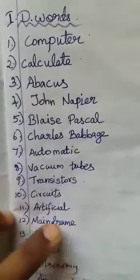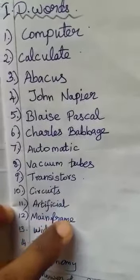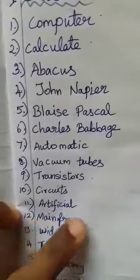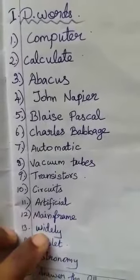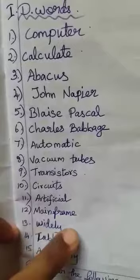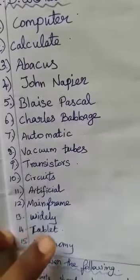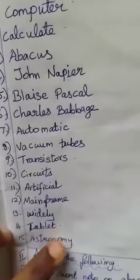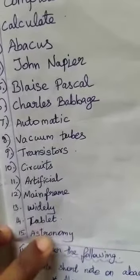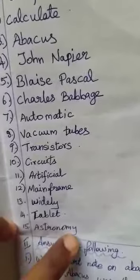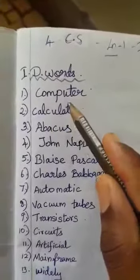Twelfth one: mainframe. M-A-I-N-F-R-A-M-E. Mainframe. Thirteenth one: widely. W-I-D-E-L-Y. Widely. Fourteenth one: tablet. T-A-B-L-E-T. Tablet. Fifteenth one: astronomy. A-S-T-R-O-N-O-M-Y. Astronomy. Once again we read.